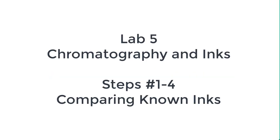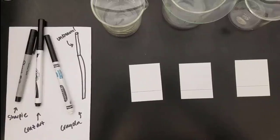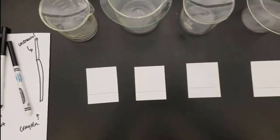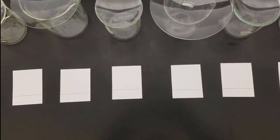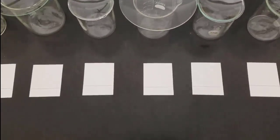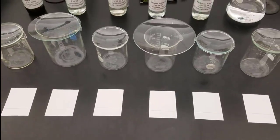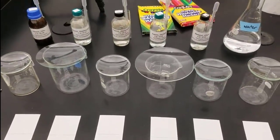Today we're working on lab five looking at chromatography and inks. The first thing you're going to see is steps one through four comparing known inks. As you can see there on the left, the inks we're using are some black inks. We've got some filter paper with lines prepared along with six beakers.